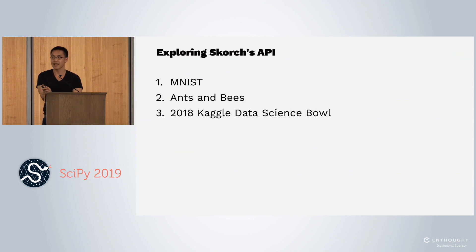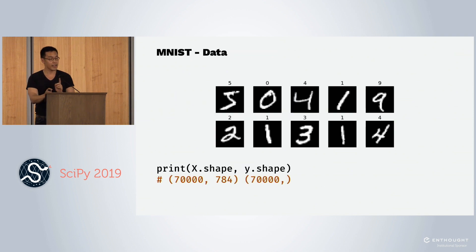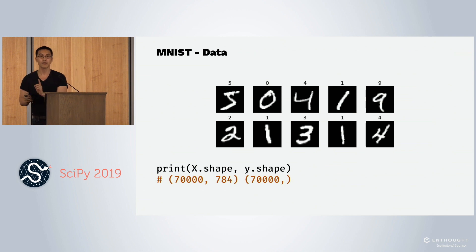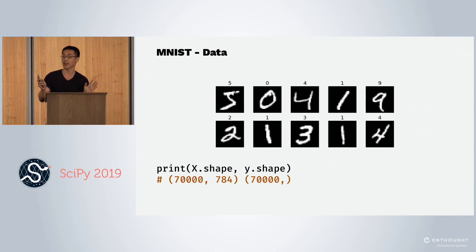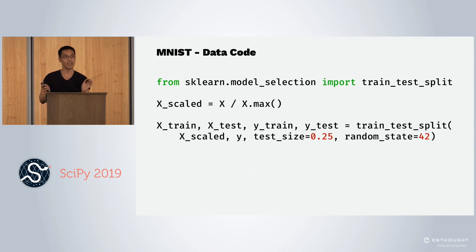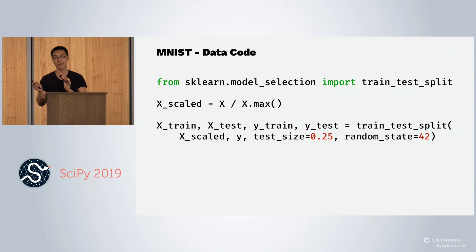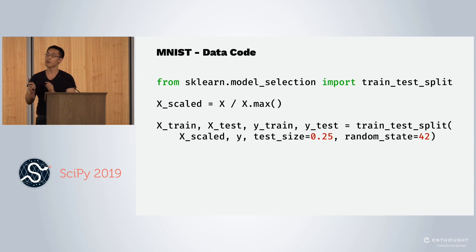Let's start with MNIST. Everyone knows MNIST. In this case, there are 70,000 of them and they're flattened. Very important to note that this data consists of NumPy arrays. We're going to use NumPy arrays in PyTorch with Scorch and it will all work. Since we all went to pre-K machine learning, we know we have to split our data into training and test sets, so we're going to do that. We can scale the data, split the data, and now we have to define our module in PyTorch.